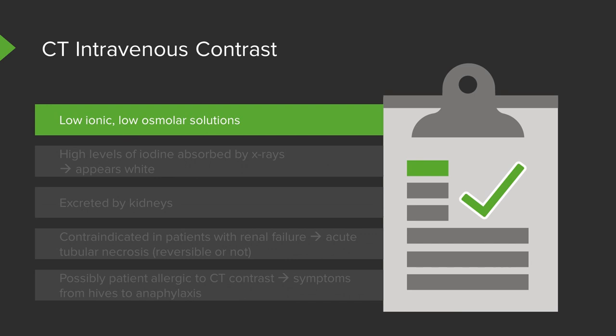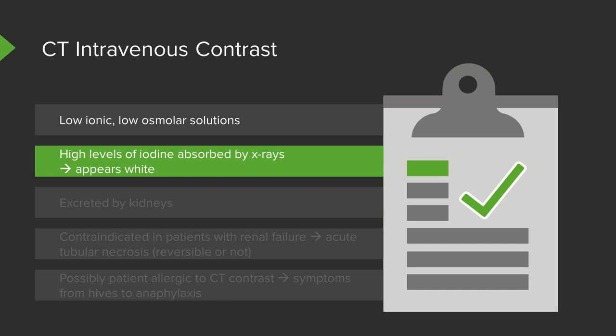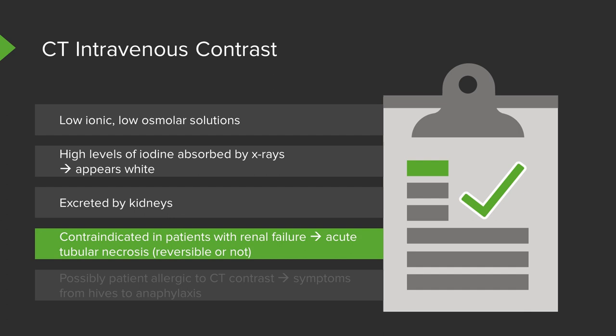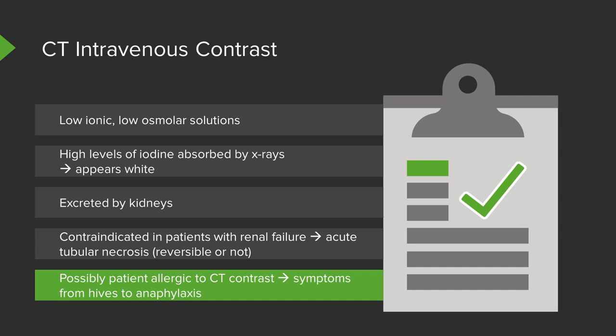Intravenous contrast is a low ionic, low osmolar solution containing high levels of iodine, which is absorbed by x-rays and makes the image appear white. It's excreted by the kidneys, so there's a contraindication in patients with renal failure because it can cause acute tubular necrosis, which may or may not be reversible. Patients may also have an allergy to CT contrast, with symptoms ranging from hives to anaphylaxis, in which case contrast usually cannot be administered even with medications on board.